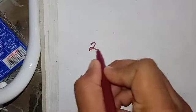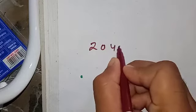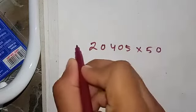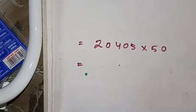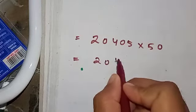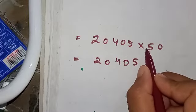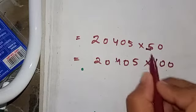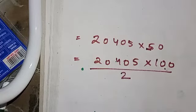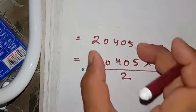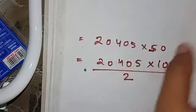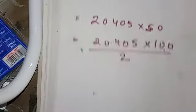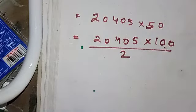Next, let us look at how to multiply any number by 50. Take 20405 × 50. The method is: since 50 = 100 ÷ 2, we multiply by 100 and then divide by 2. Multiplying by 100 is trivial — you simply write 20405 followed by two zeros. You might say this seems more difficult, but it is not.